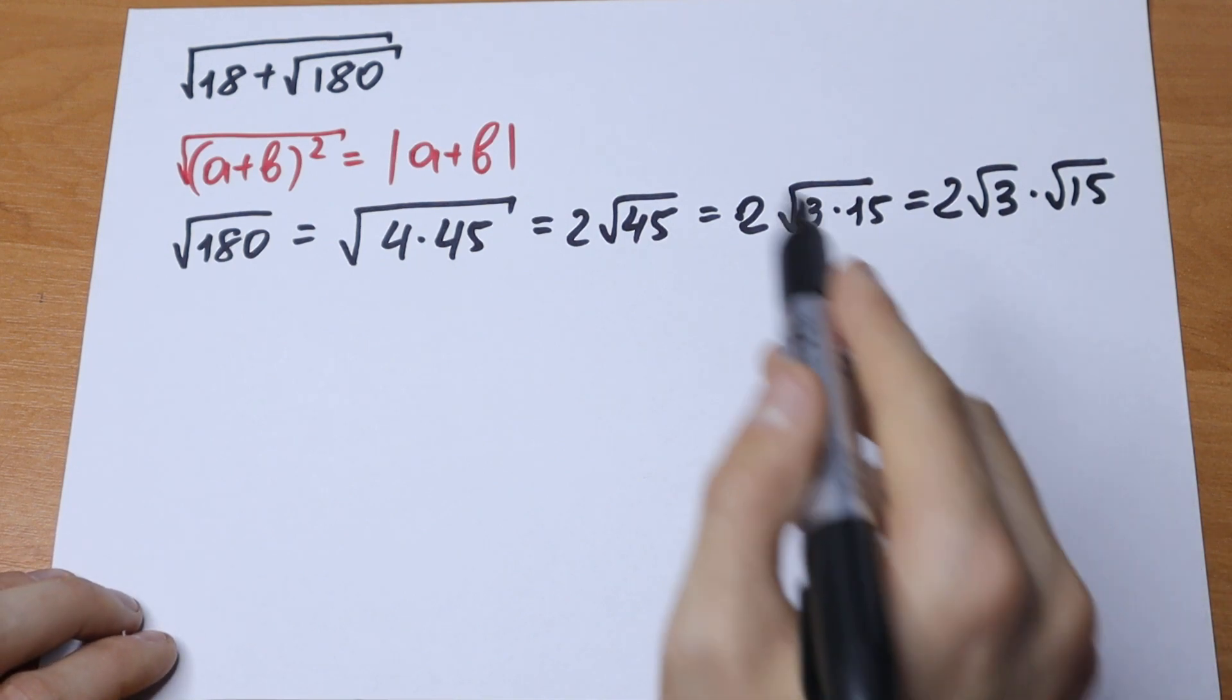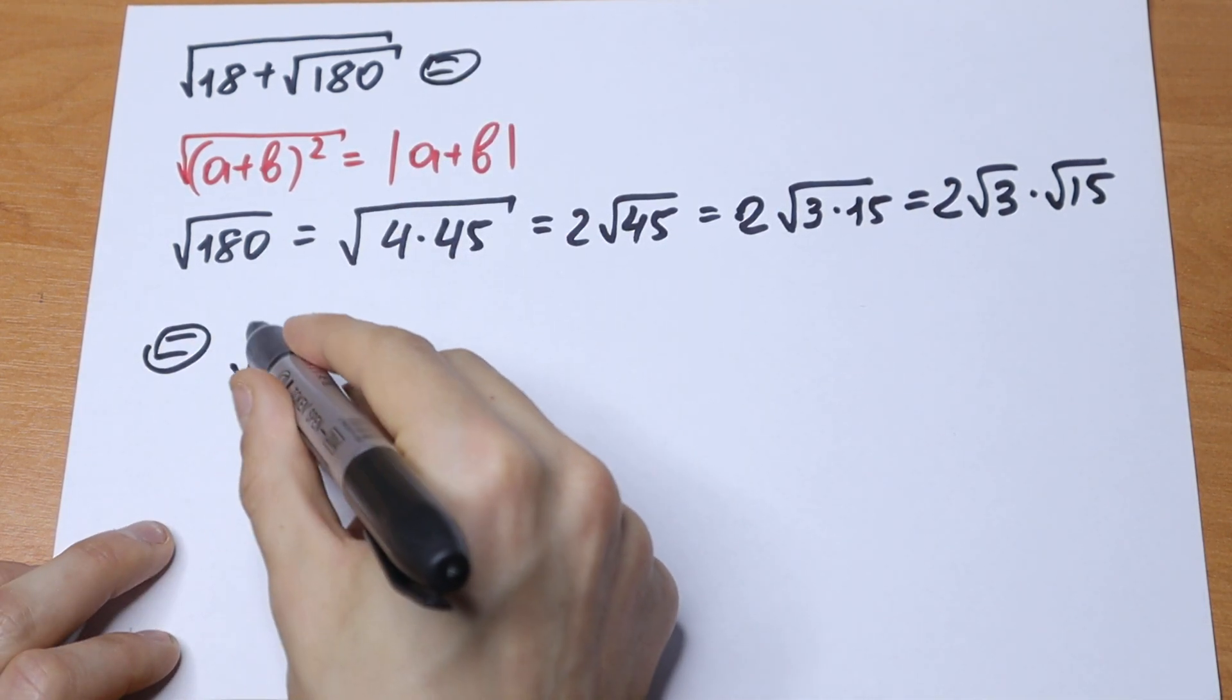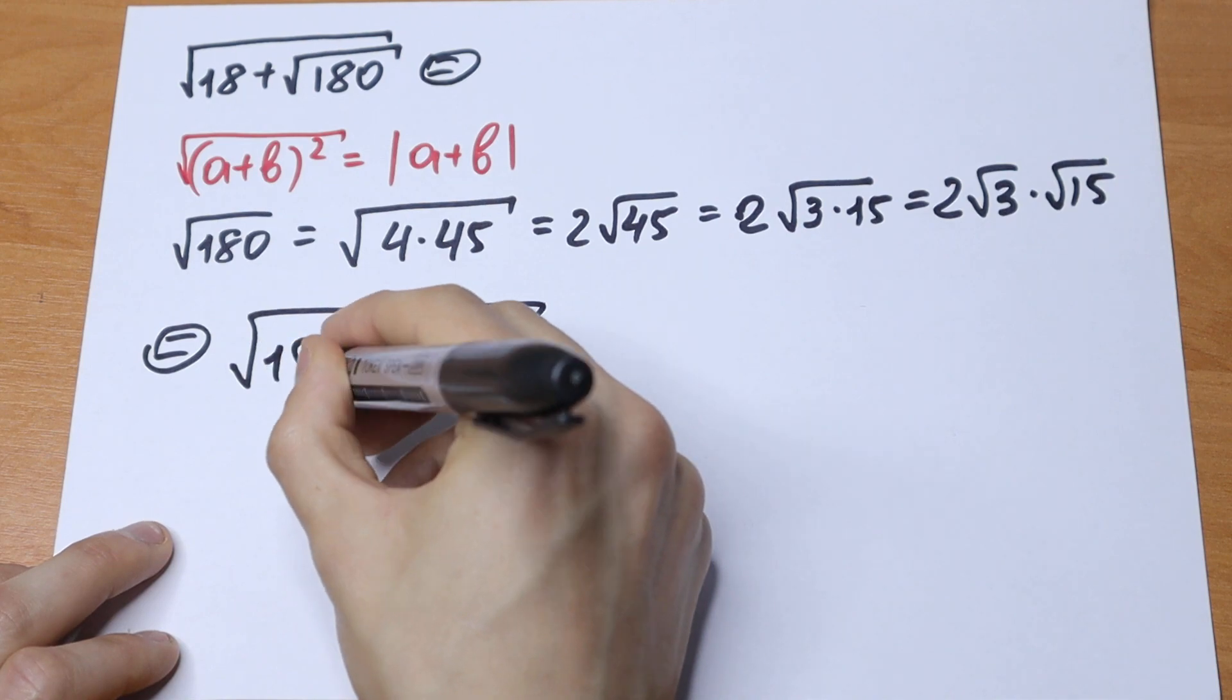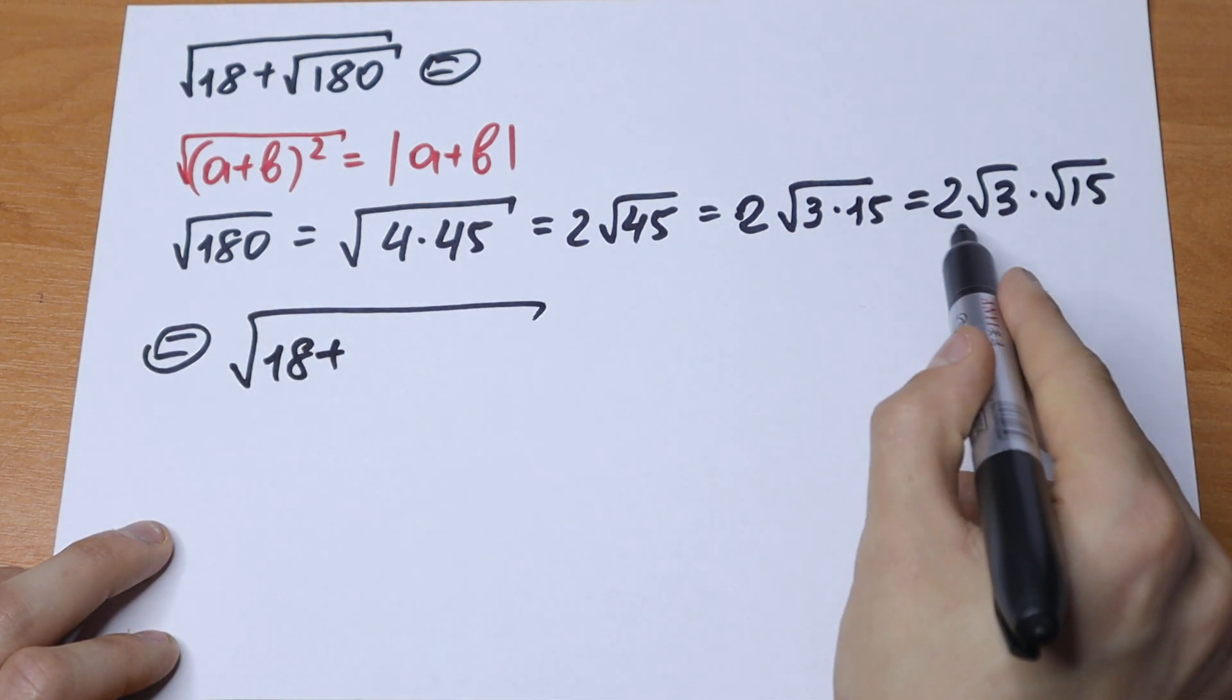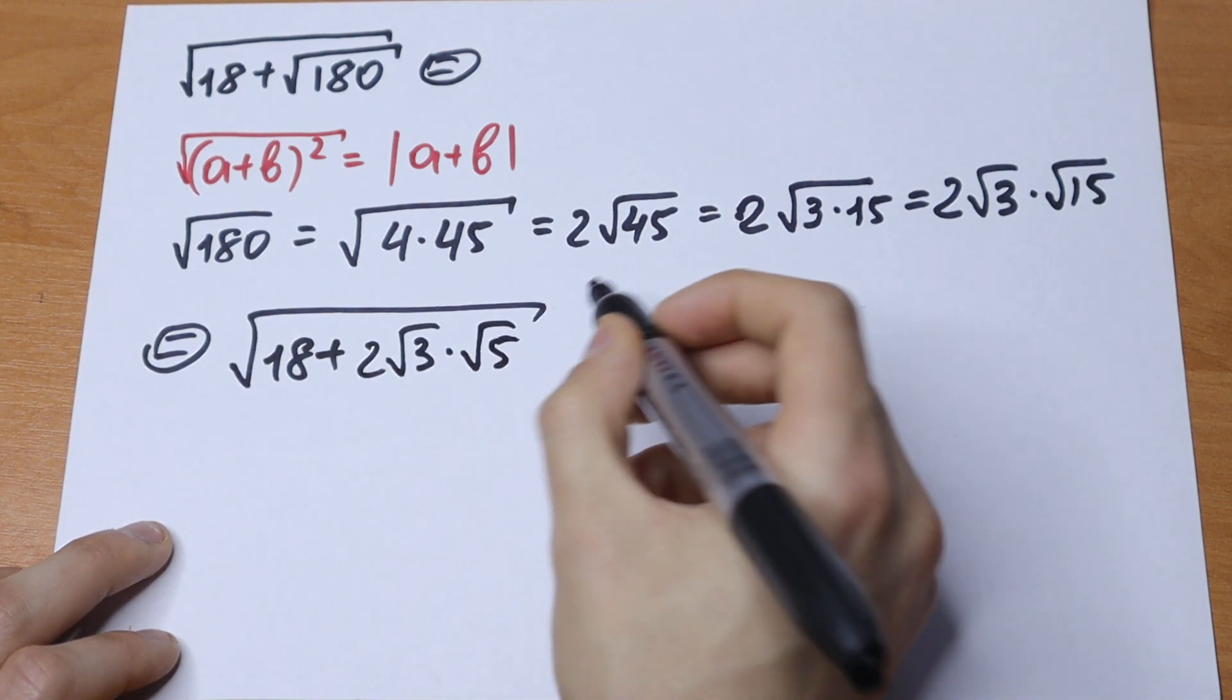So let's go to our square root. We will receive 18 plus this that we just simplified: 2 square root of 3 times square root of 15.